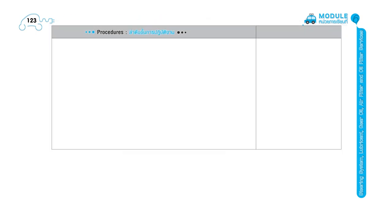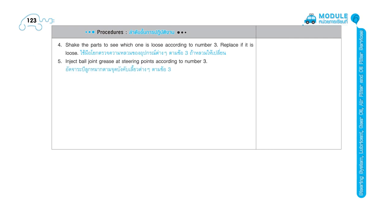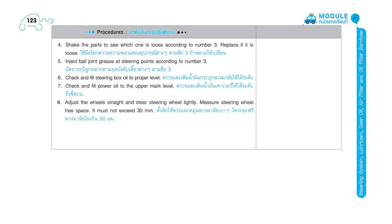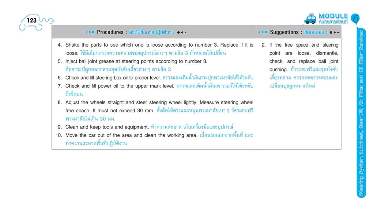Procedures continued: shake the parts to see which one is loose and replace it if loose. Inject ball joint grease at steering points. Check and fill steering box oil to the proper level. Check and fill power oil to the upper mark level. Adjust the wheels straight and steer the steering wheel lightly. Measure steering wheel free space — it must not exceed 30 millimeters. Clean and keep tools and equipment. Move the car out of the area and clean the working area.